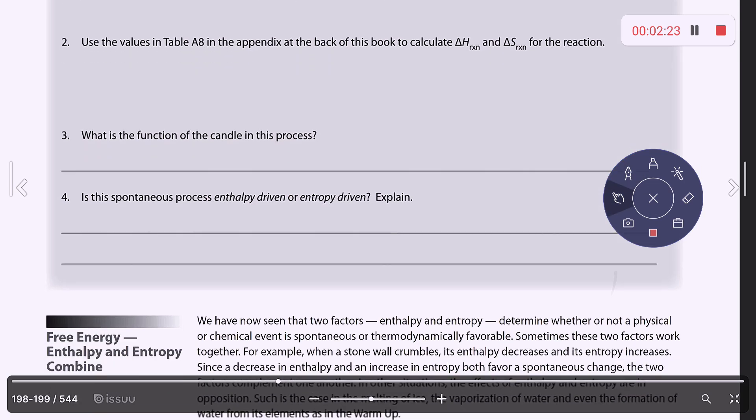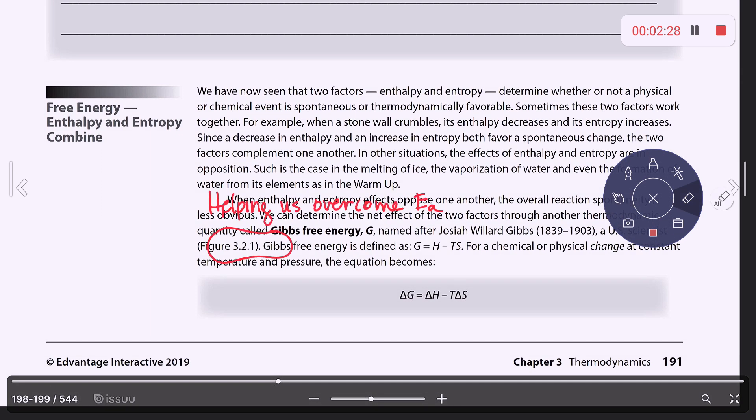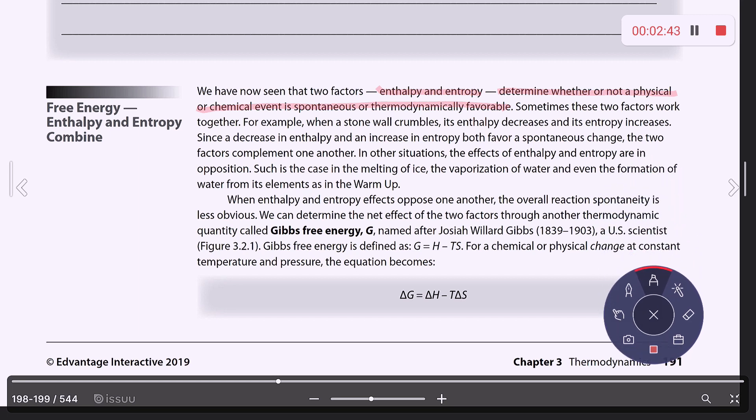Let's talk about free energy and how enthalpy and entropy kind of play a role. So there are two factors, enthalpy and entropy, and these determine whether or not a physical or chemical process is spontaneous or favorable thermodynamically. And sometimes these two things work together. For instance, if a stonewall crumbles, the enthalpy decreases, but the entropy increases. So if there's a decrease in enthalpy, but an increase in entropy, both would favor a spontaneous change. So that means they work with each other.